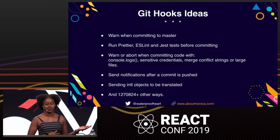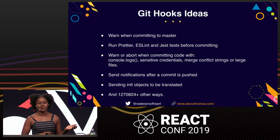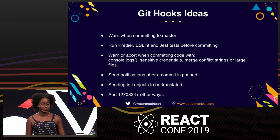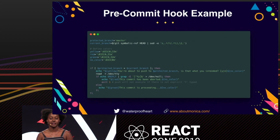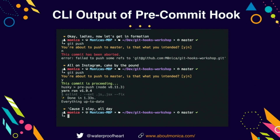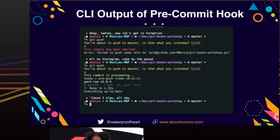Some things you can implement: you can warn when you're committing to master, make sure you run Prettier, ESLint, and Jest before committing, or make sure you don't commit console.logs. But since these are scripts, you can essentially implement anything. Here's an example of a pre-commit hook I wrote in bash, which basically says that if you're trying to commit to the protected branch — master — it prints a prompt to the CLI asking if that's what you intended. If you click yes, it proceeds as normal; if you click no, it exits with status code 1 and the commit will not go through. You can see that in this screenshot — whenever I try to commit to master, this prompt would print out.